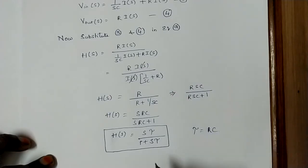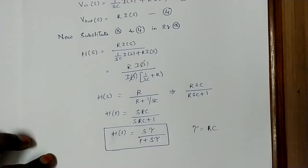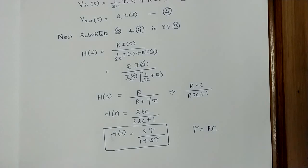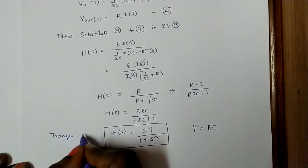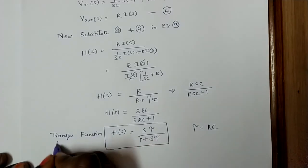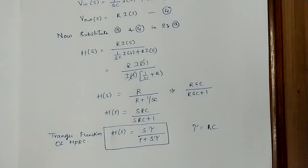Here, τ (tau) is the product of the R and C components used in this circuit, i.e., τ = RC. This is the transfer function of the HP RC circuit: H(s) = s·τ / (1 + s·τ). Using this transfer function, you can find the output expressions for different non-sinusoidal signals applied to this circuit. In this session we have discussed how the transfer function of the HP RC circuit is calculated. Thank you.